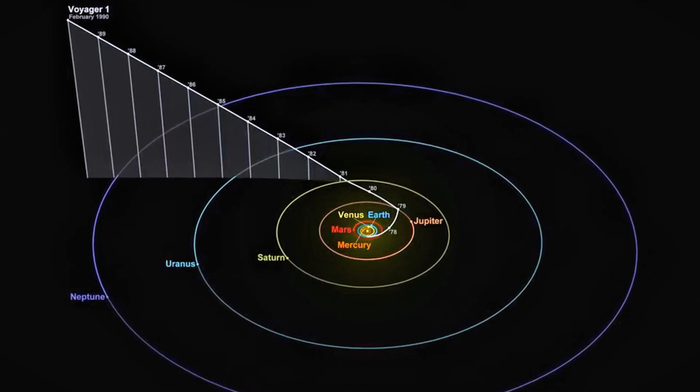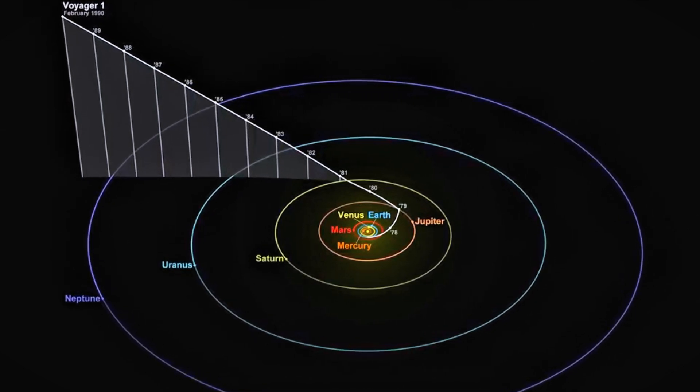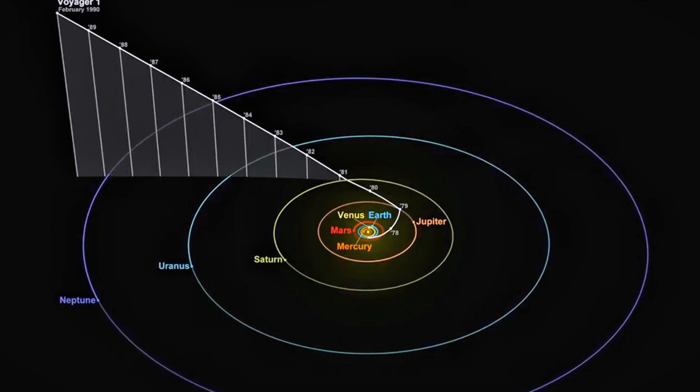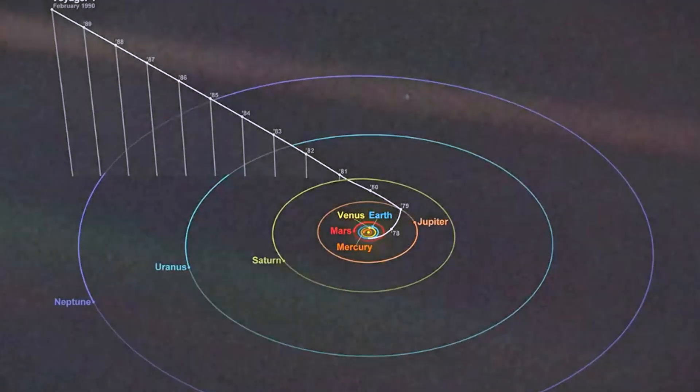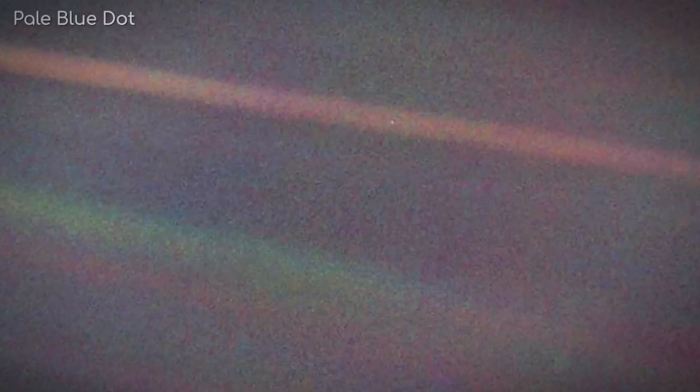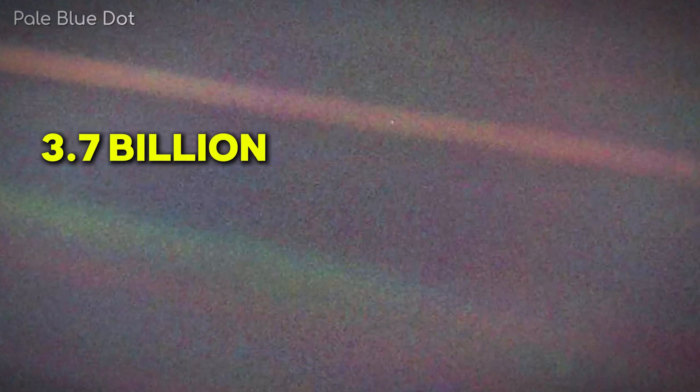On February 14, 1990, Voyager 1 captured a poignant family portrait of our solar system, including the iconic pale blue dot image of Earth, taken from over 3.7 billion miles away.